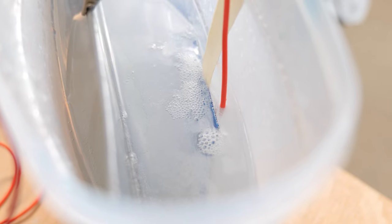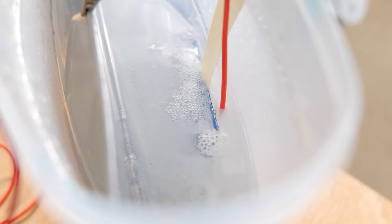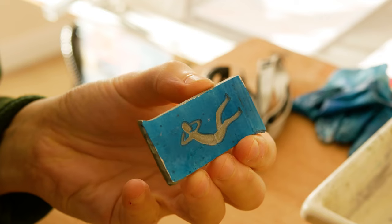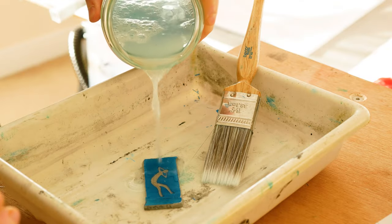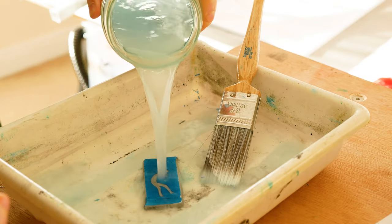You should see some bubbling at the plate which is the etching process taking place. You can see after a few hours I have a deep etch of my logo in the aluminum plate. To clean off the etch resist just use some warm water and a soda crystal solution.